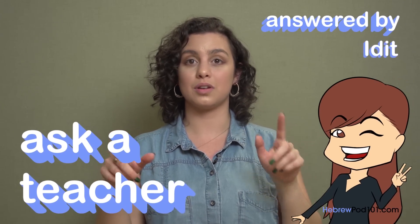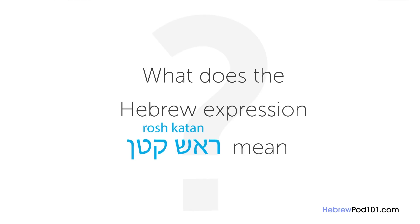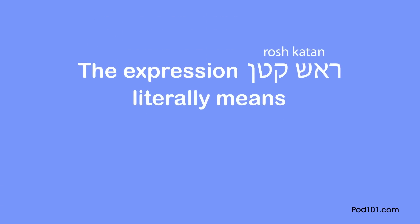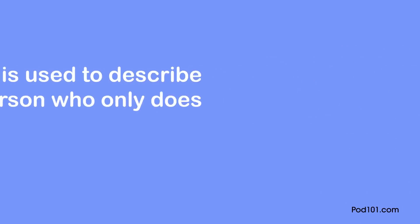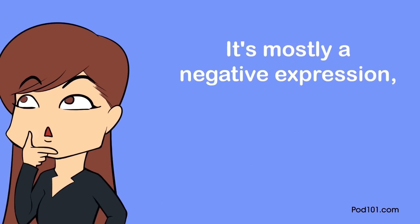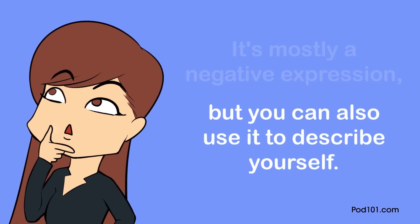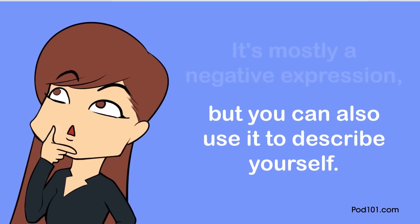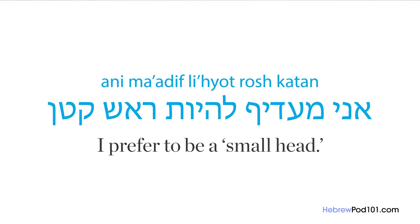Welcome to Ask a Teacher, where I'll answer some of your most common Hebrew questions. The question for this lesson is: what does the Hebrew expression 'rosh katan' mean? The expression 'rosh katan' literally means 'small head' and is used to describe a person who only does the bare minimum or doesn't think outside the box. It's mostly a negative expression, but you can also use it to describe yourself: 'Ani ma'adif lihyot rosh katan' — I prefer to be a small head.